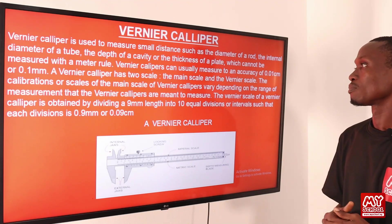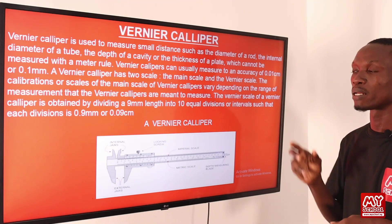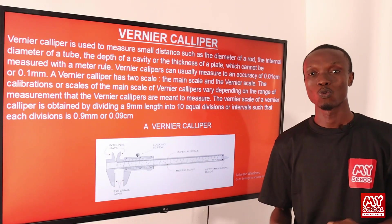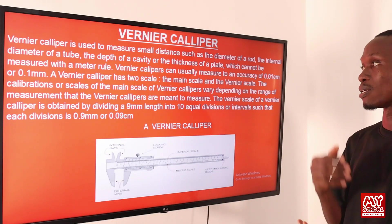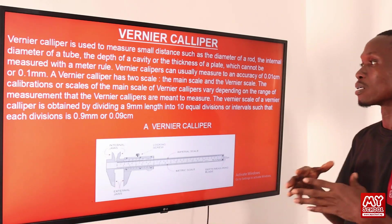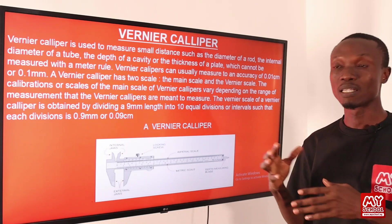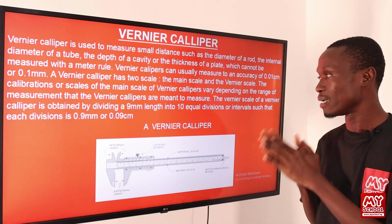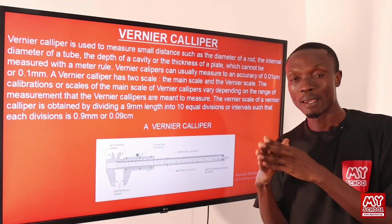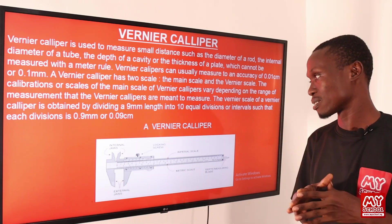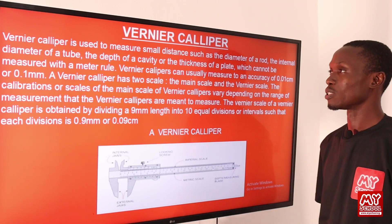The vernier caliper can usually measure to an accuracy of 0.01 centimeter or 0.1 millimeter. A vernier caliper has two scales: the main scale and the vernier scale. The calibration of the vernier scale depends on the measurement that the vernier caliper is meant to measure. The vernier scale is obtained by dividing a 9 mm length into 10 equal divisions, such that each division is 0.9 mm or 0.09 centimeter.